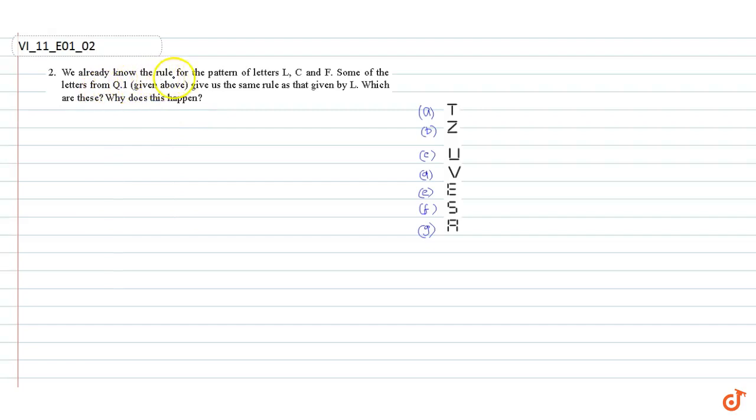In this question we already know the rule for the pattern of letters L, C, and F. Some of the letters from question 1 give us the same rule as that given by L. Which are these and why does this happen?